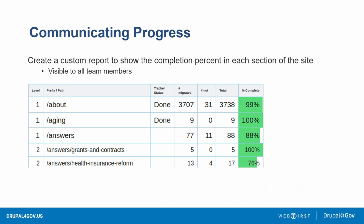The more important communication piece we added was a report showing the status of our migration. Because we were breaking things down by path, we have a table where each section of the site is represented by the first slug in the URL path, and you can expand to see lower layers within that section. This was a great communication tool so everybody was on the same page — motivational and helpful for planning which sections to tackle in the next sprint.